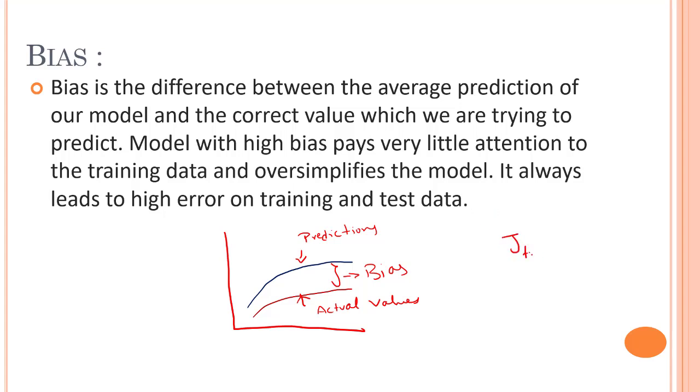For bias, the training cost function J train will be having high error rate. When we have very high bias, this is known as underfitting of data.